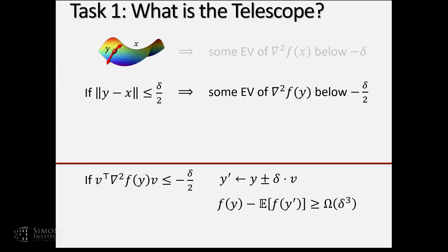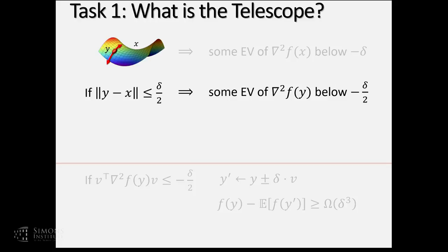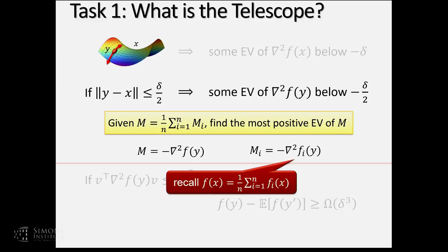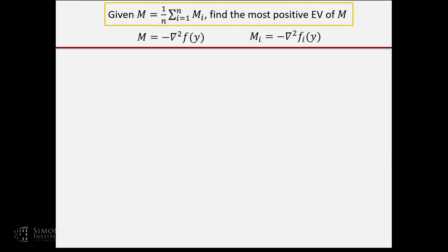I haven't solved how to find such a vector v. Let me abstract this problem using matrix language. Suppose we have a matrix M written as a stochastic form — an average of Mi's. The problem reduces to finding the most positive eigenvalue of M. If we can solve this, we set M to be the negative Hessian and Mi to be the negative Hessian of fi, and solve the original problem.